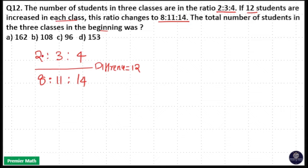So to make it equal, take the difference between 2 and 3, it is 1. The difference between 3 and 4 is also 1.